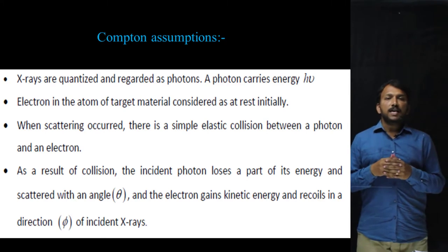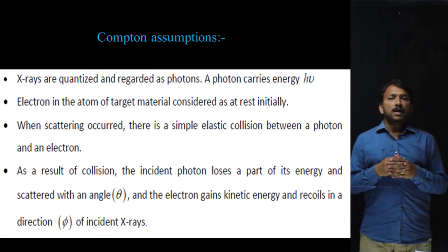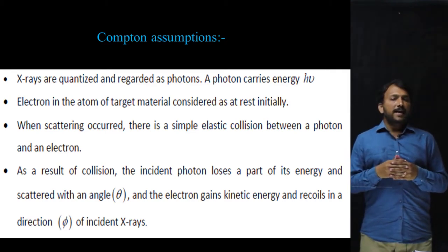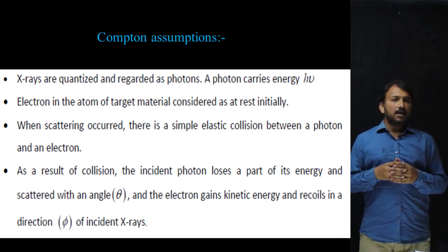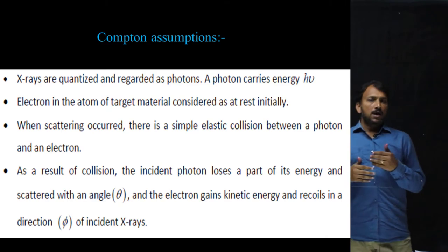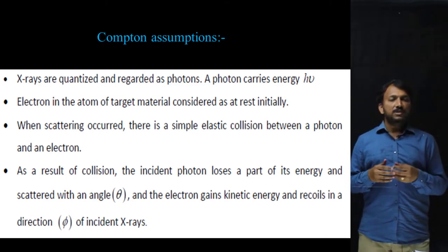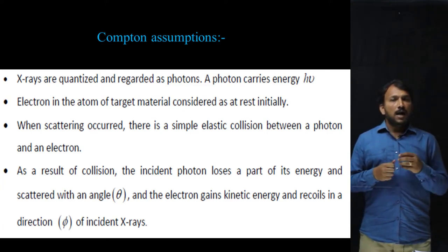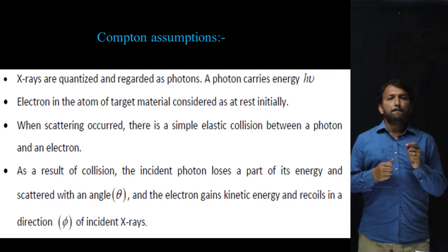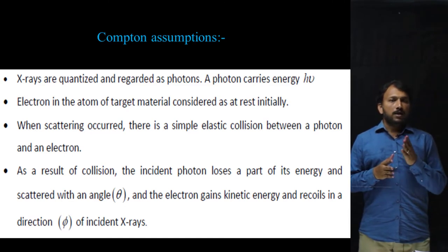Compton's assumptions: First, he considered that X-rays are quantized — that is, X-rays consist of particles called photons and their energy is hν. Second, the electron in the target atom is considered to be at rest. When scattering occurs, there is a simple elastic collision between the photon and the electron. As a result of the collision, the incident photon loses some part of its energy and is scattered at an angle theta with the horizontal direction, while the electron gains kinetic energy and recoils at an angle phi. The difference between the higher wavelength and the lower wavelength is called the Compton shift.